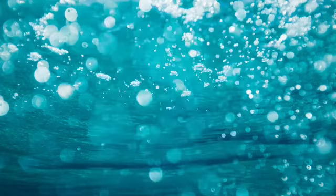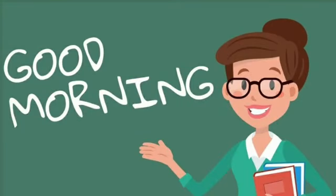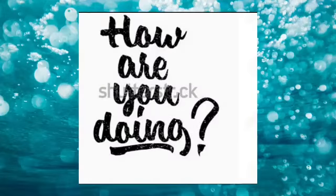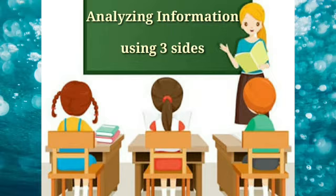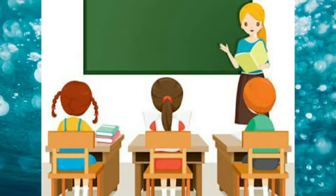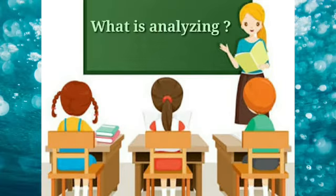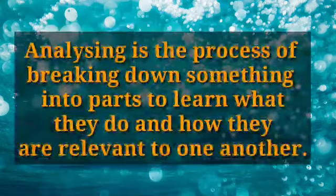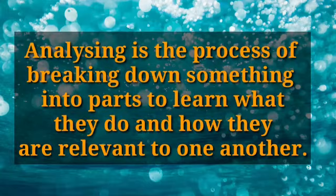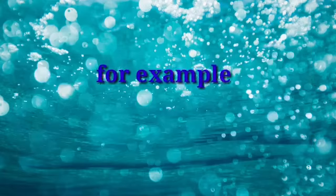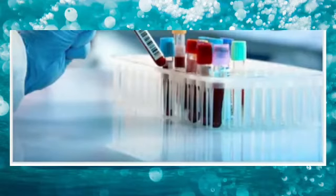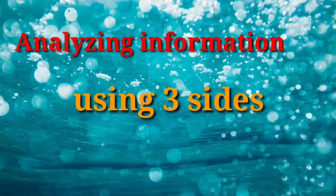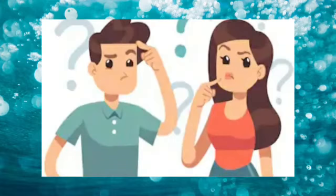A wonderful and peaceful morning to you, children. How are you doing? Great. Today let us learn a new topic — analyzing information using three sides. But before that, let us have a quick review of the previous lesson. So what is analyzing? Analyzing is the process of breaking down something into parts to learn what they do and how they are relevant to one another. For example, examining blood in a lab to discover all of its components is a simple example of analyzing.